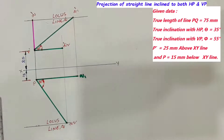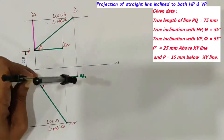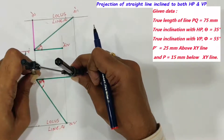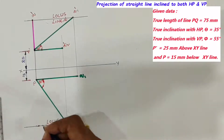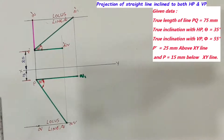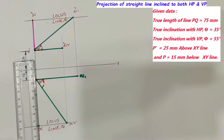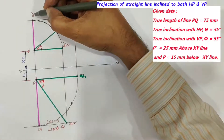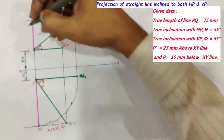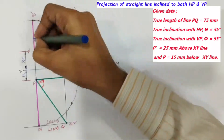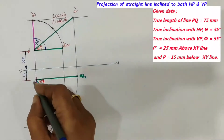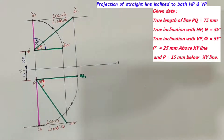The next step is drawing the final position of the line in the top view. Draw an arc onto the Q locus line and name this point Q. Then join P and Q. Here, p'Q' is the final projection of the line in the front view and its inclination with HP is 90 degrees. PQ is the final projection of the line in the top view and its inclination with VP is 90 degrees.